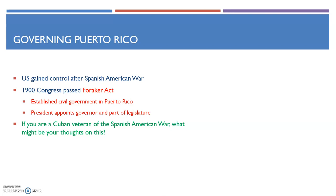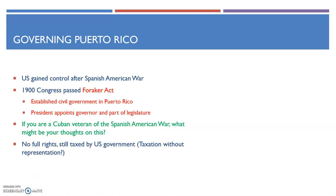So if you're a Cuban veteran of the Spanish-American War, your thoughts about this might not be very good. You just fought for your supposed independence against Spain with the Americans, and now the United States is taking a nation right next to you and essentially saying it's a puppet government — we're going to appoint your governor and part of your legislature. And Puerto Rico does not have full rights as American citizens. They are American citizens, but they do not have the same representation or rights, although they are still taxed by the U.S. government — which raises the question of taxation without representation, which is the very basis of the U.S. founding after throwing off the British.